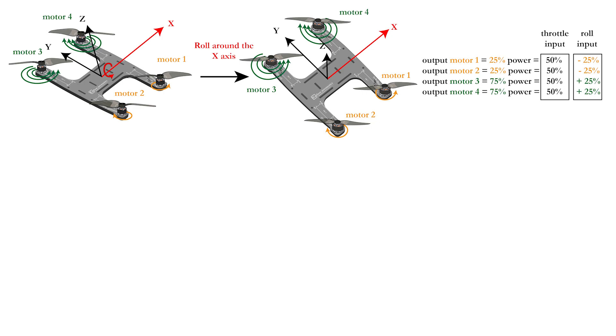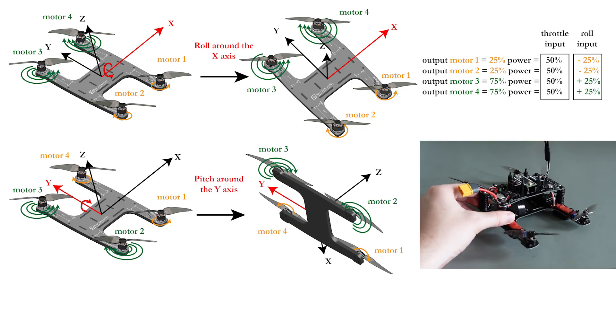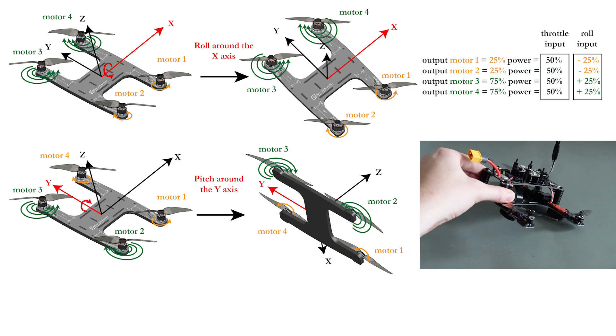This means that you need an additional roll input, which will lower the power of motors 1 and 2 with for example 25%, and at the same time increase the power of motors 3 and 4 with 25% as well. With the same reasoning, you can estimate the motor power for a pitch movement.